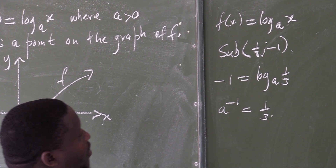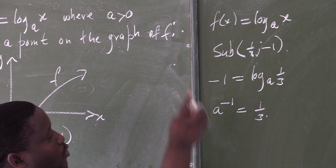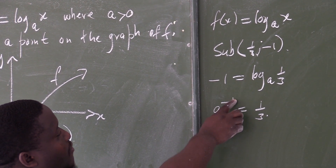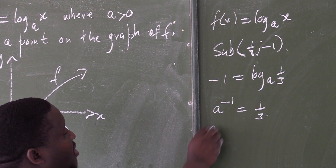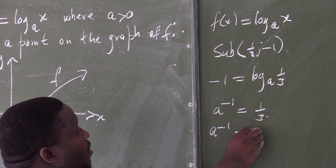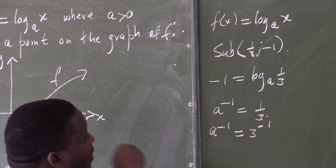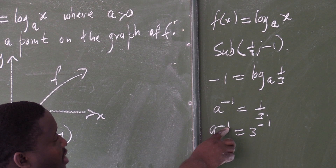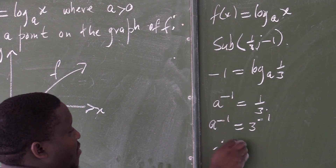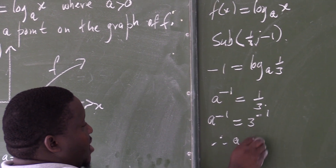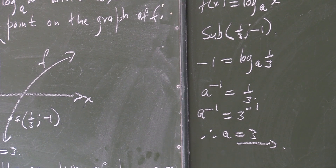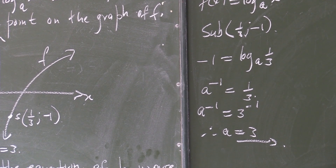Now it's a matter of solving. We have a to the power of negative 1 equals 1/3. This can be written as a to the power of negative 1 equals 3 to the power of negative 1. The exponents are the same, therefore the value of a has to be positive 3.